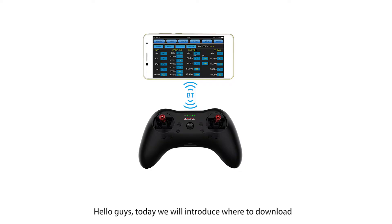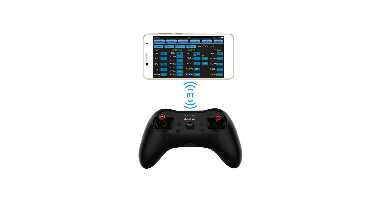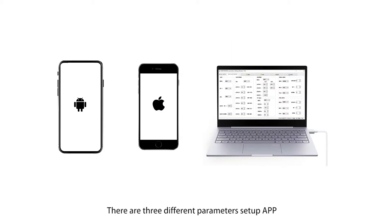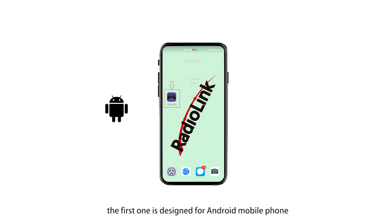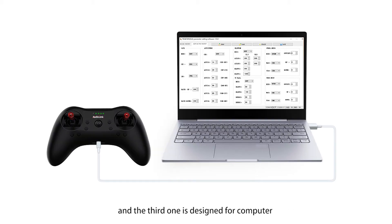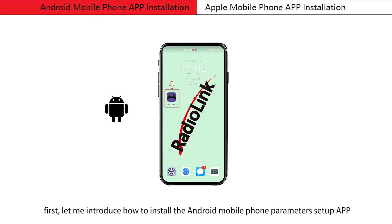Hello guys, today we will introduce, download, and install the parameters setup app for T8s. Attention: this tutorial video is just adapted to the new version T8s and T8fb with Bluetooth model. There are three different parameters setup apps: the first one is designed for Android mobile phone, the second for Apple mobile phone, and the third for computer. First, let me introduce how to install the Android mobile phone parameters setup app.